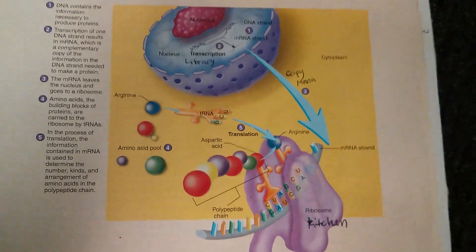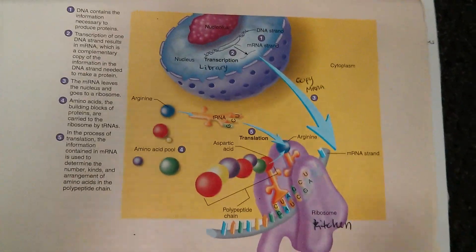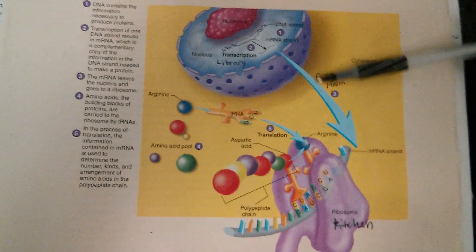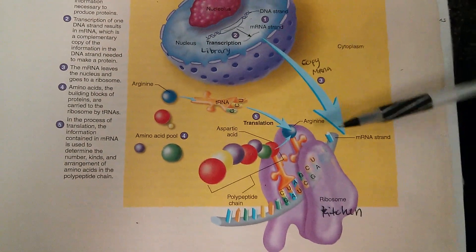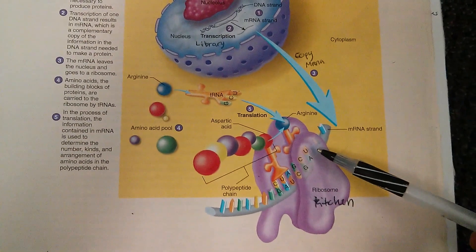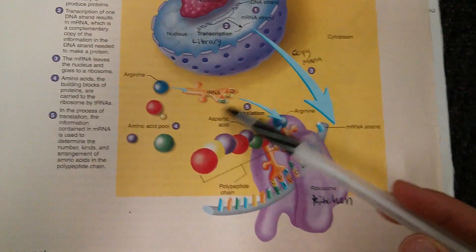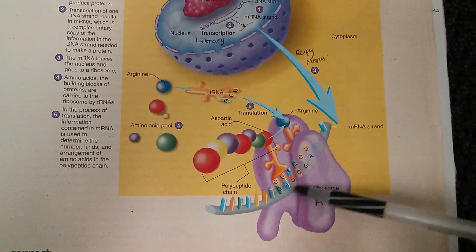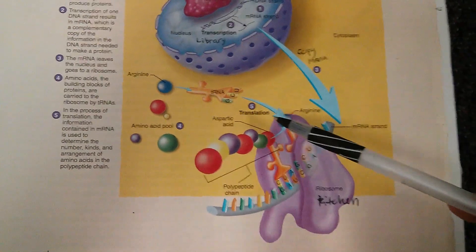And so this is just a cute little way of remembering how the transcription and translation process works. The copying process here is called the transcription, and then the process of putting the corresponding amino acids on the messenger RNA strand is called the translation.